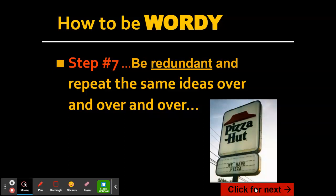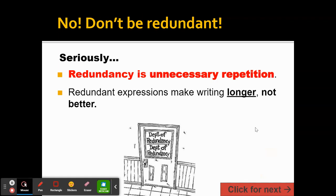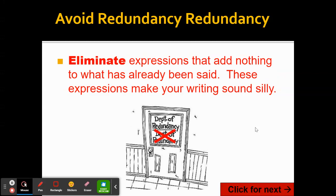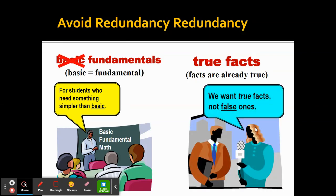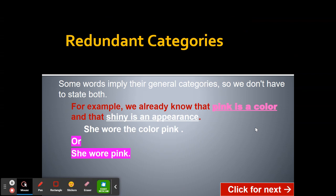Don't be redundant — repeating yourself is a sure way to be wordy. This sign is a great example: the company name is Pizza Hut. I don't need you to tell me you have pizza; I expect it. Unnecessary repetition is redundancy — it makes things longer, not better. You don't need to say 'basic fundamentals' because 'basic' and 'fundamental' mean the same thing. You don't need to say 'true facts' because in order to be a fact it must be true. Some words imply their categories, so 'she wore the color pink' can just be 'she wore pink.'